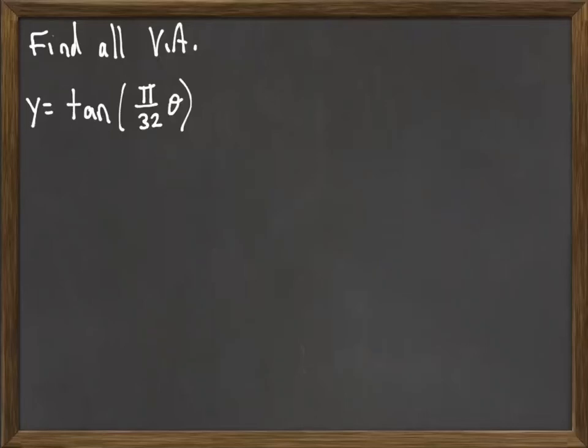In this last example, we're trying to find all the vertical asymptotes of this trig function, tangent of π over 32 θ.